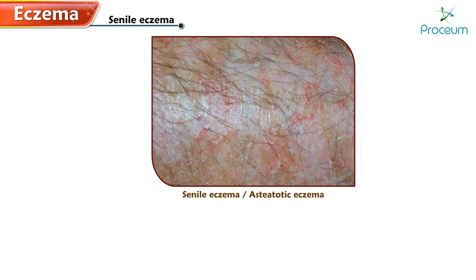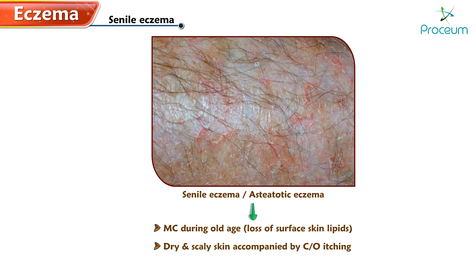Now let's talk about senile eczema, or osteototic eczema, which is more common during old age due to the loss of surface skin lipids. Patients present with dry and scaly skin accompanied by complaints of itching. This condition is frequently observed over the legs.